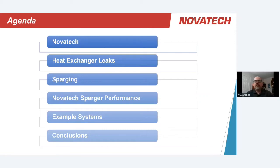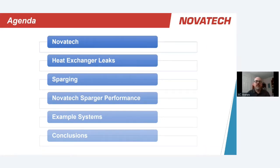Then we'll get into the nature of heat exchangers and the leaks, and why we actually care about monitoring for them. We'll look at the various ways leaks can present themselves and the nature of the hydrocarbons themselves. Then we'll focus on one specific technology known as sparging, our approach, and look at the sparger design that Novatec has created and implemented. I'll show you some example systems and we'll summarize it all up at the end.